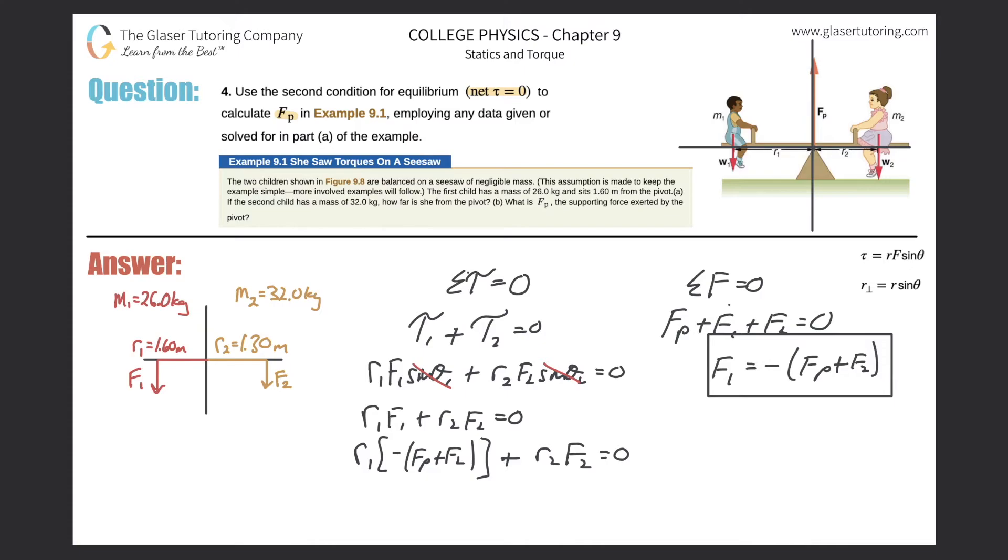We're going to subtract this term over to the right hand side. So that's going to be R sub one. And what I'm going to do is realizing that all this is multiplied together, I'm just going to pull the negative out.